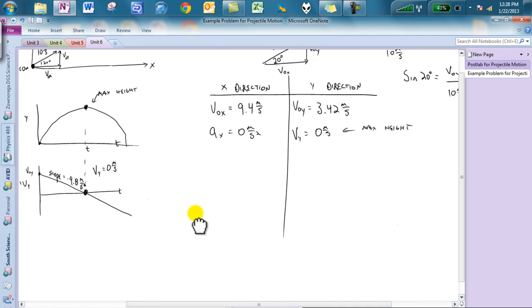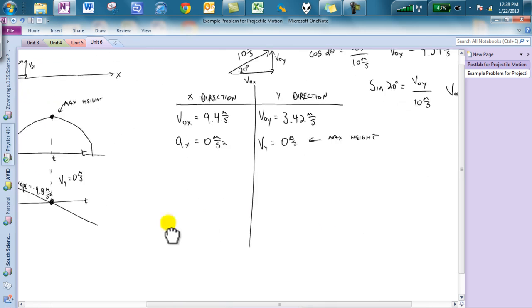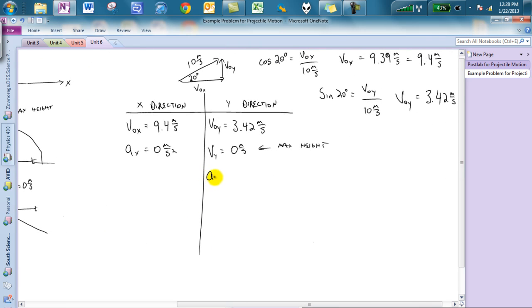And what else do we know? Oh, in the y direction, we also know that my acceleration is equal to negative 9.8 meters per second squared. As long as you're on Earth and close to the surface of Earth, that will be true.